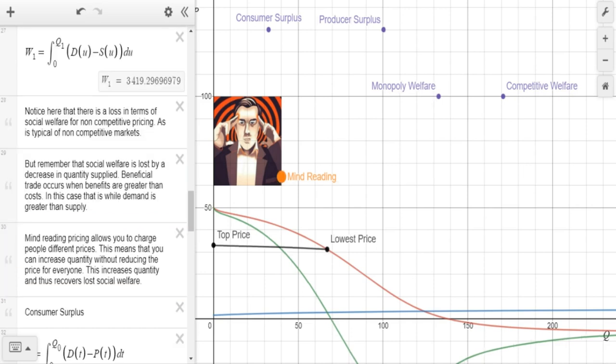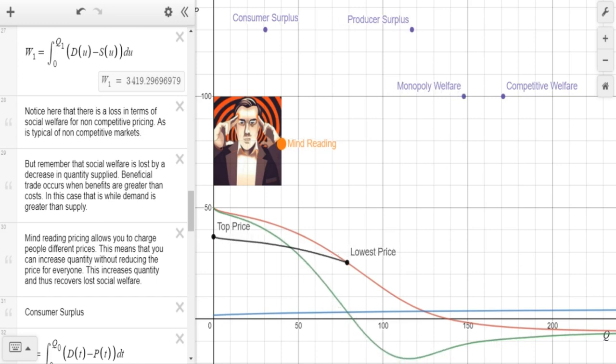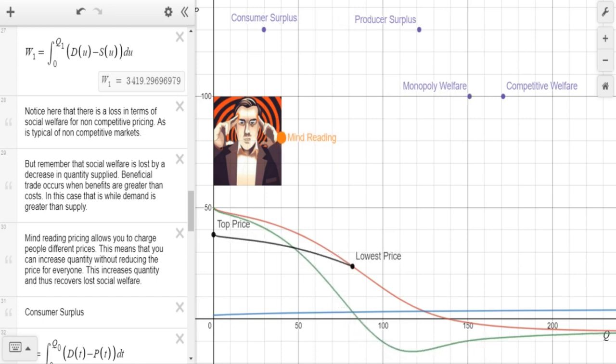So when we increase mind reading, we are able to increase the quantity supplied. And since we can charge people different prices with our mind reading, we increase the quantity. And thus, this will recover our lost social welfare, bringing us closer and closer to the competitive welfare.